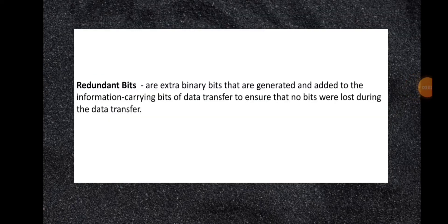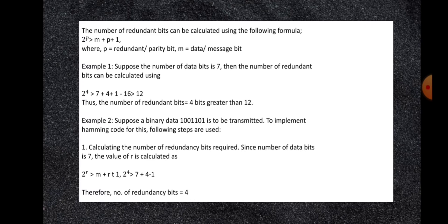Redundant bits are extra binary bits that are generated and added to the information-carrying bits of data transfer to ensure that no bits were lost during transmission. The number of redundant bits can be calculated using the formula: 2^P > M + P + 1, where P is the redundant or parity bit and M is the data or message bit. For example, if the number of data bits is 7: 2^4 > 7 + 4 + 1, which gives 16 > 12. Thus, the number of redundant bits equals 4.